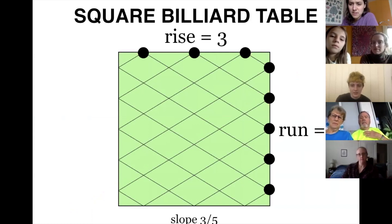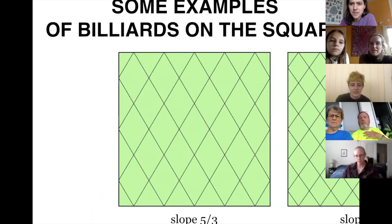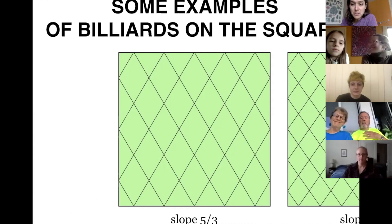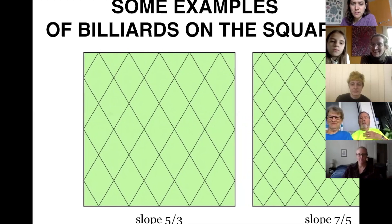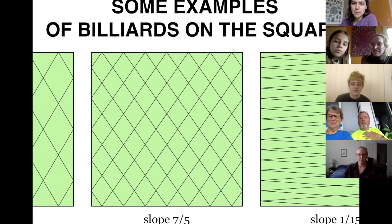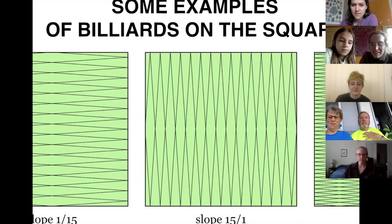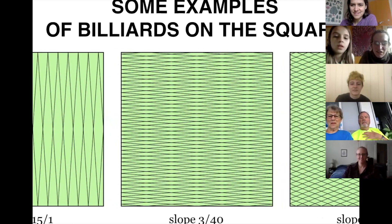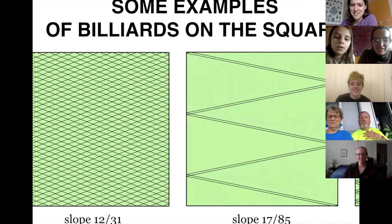That's how slope gives you these pictures. Let me show you a little gallery — it's like a beauty contest where a bunch of beautiful billiard paths parade past you and you decide which is most beautiful. There's slope 5 over 3, 7 over 5 — just some examples of the kinds of things periodic billiard paths look like on the square. Any favorites? We like 1 over 15.